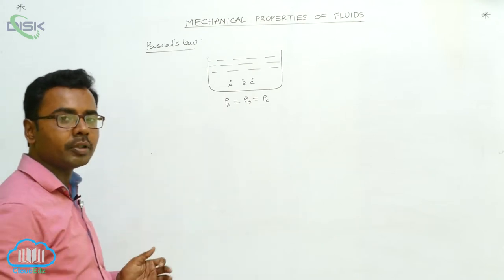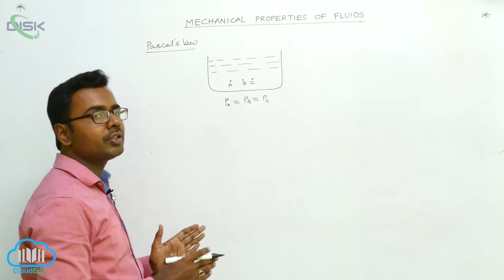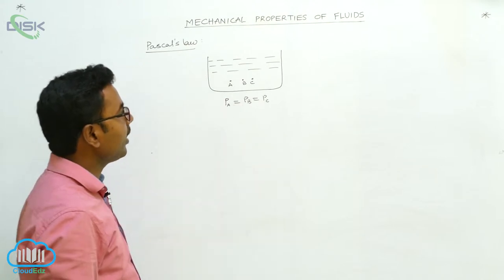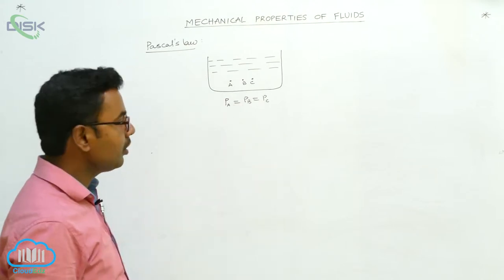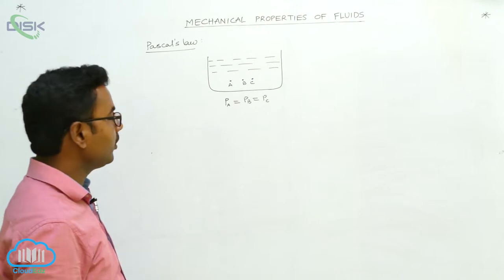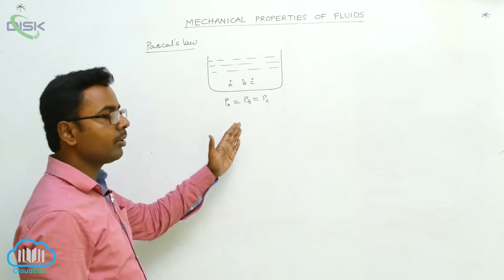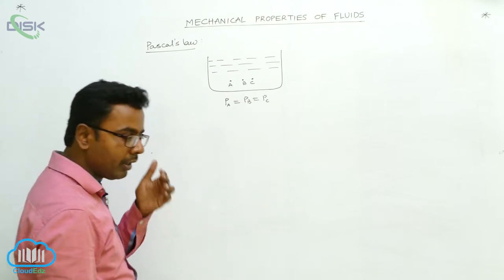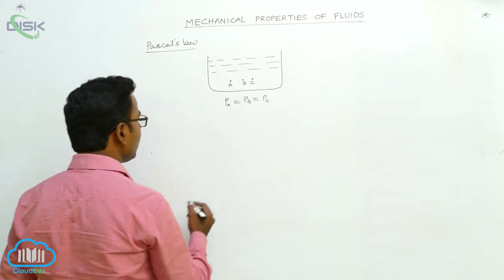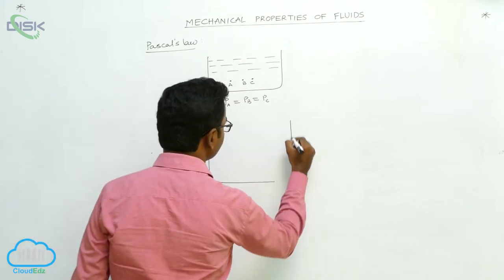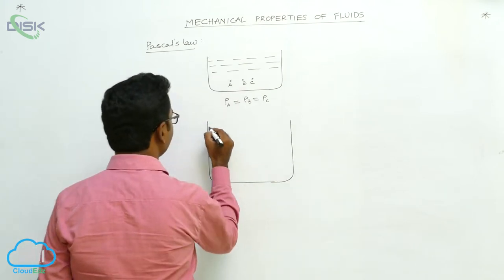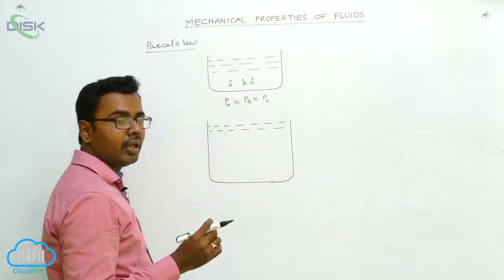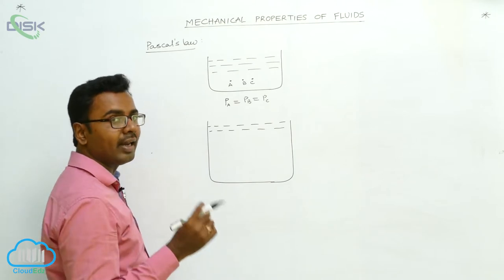Pascal's law states that the pressure is the same at all points which are at the same horizontal level — the same height. So points A, B, and C are at the same horizontal level, so the pressure at those points will be the same. This Pascal's law can be demonstrated and verified. We consider a liquid-containing container, and in this liquid we consider a small element in the form of a right-angle prism.